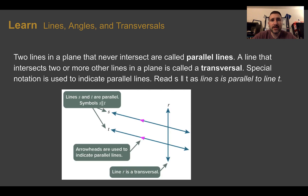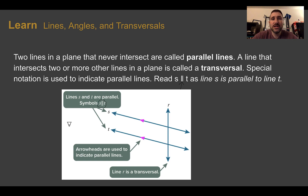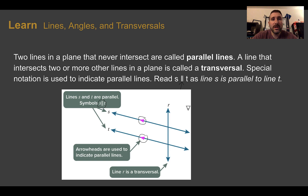Two lines in a plane that never intersect are called parallel lines. A line that intersects two or more other lines in a plane is called a transversal. Special notation is used to indicate parallel lines — here we have this symbol with two lines that almost looks like two L's, read as 'line S is parallel to line T.' We can also see arrowheads in the middle of lines used to indicate parallel lines. A line that crosses two or more lines, such as line R, is called a transversal.